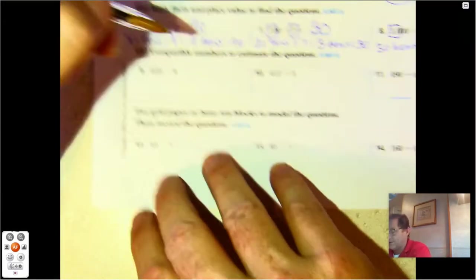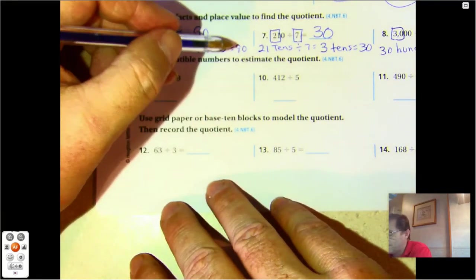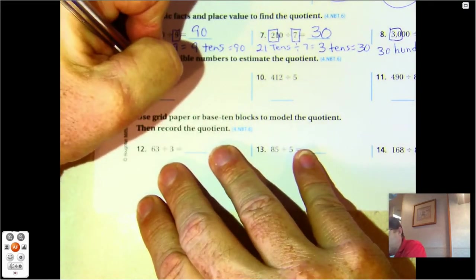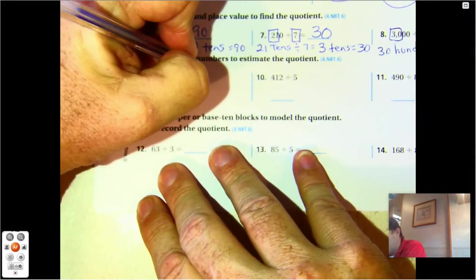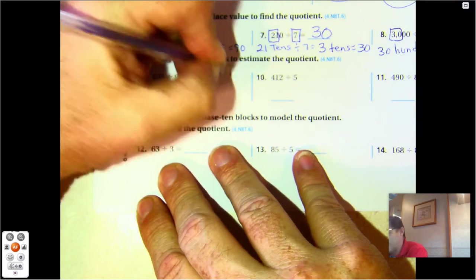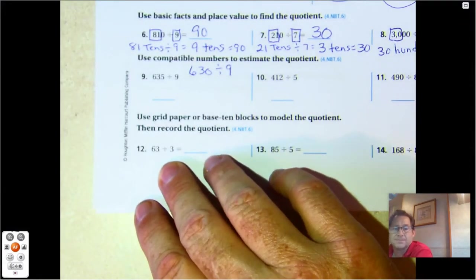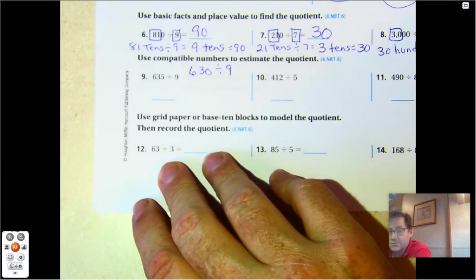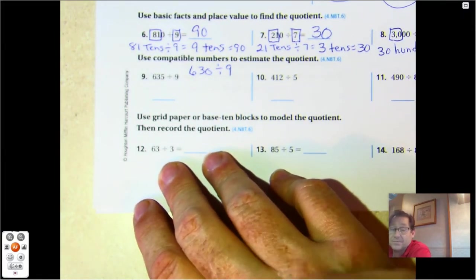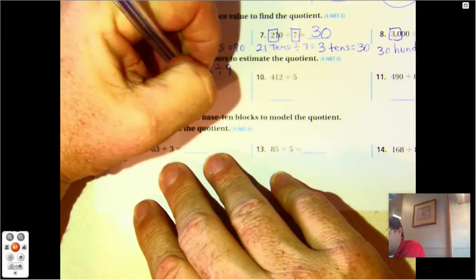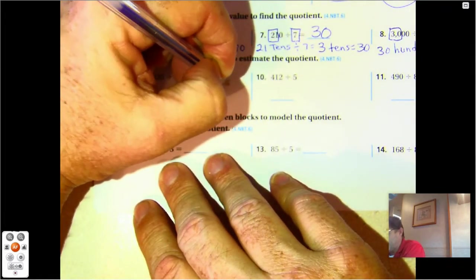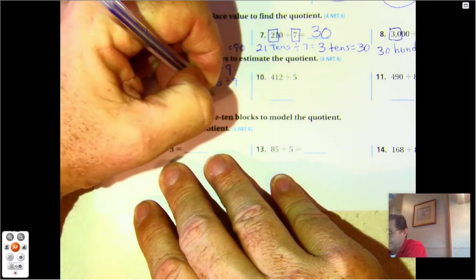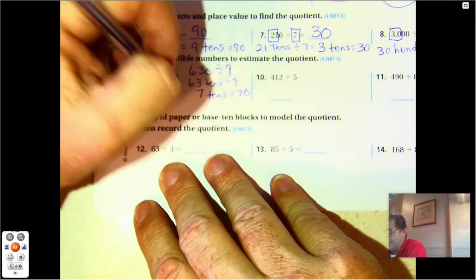Number nine: 635. We're going to use compatible numbers to estimate the quotient. We want to change this to 630 divided by nine. 63 divided by nine is a compatible number because we can do 63 divided by nine in our head because it's a basic math fact. So we're going to say 63 tens divided by nine. 63 divided by nine is seven. Seven tens equals 70.